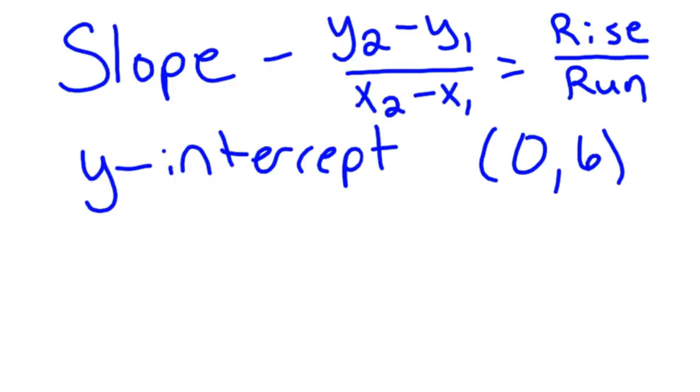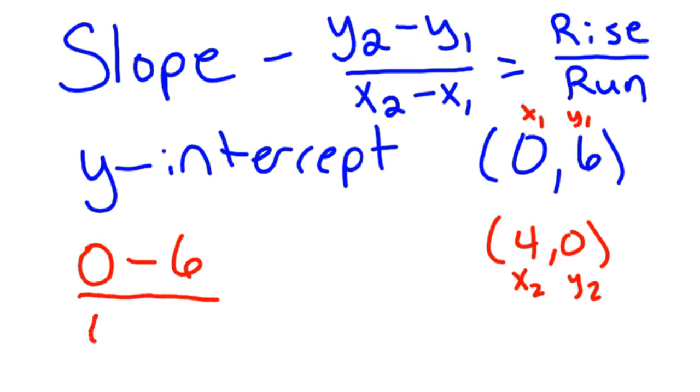So the slope of this thing is your rise is negative 6, and your run is 4. And that reduces to negative 3 halves. And that's finding it graphically. If you want to find it with the equation, remember we had our two points. We had (4, 0), and (0, 6). So this is x1, this is y1, this is x2, this is y2. And so you just substitute those in, and you'll get the same thing. So y2, which would be 0, minus y1, which would be 6, over x2, which would be 4, minus x1, which is 0. And you get negative 6 over 4 minus 0 is 4, which again reduces to negative 3 halves. So that's how you could find it with the equation. So you can use either. I like to show both just so you can see them both.